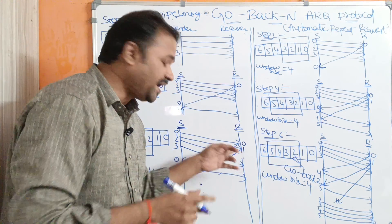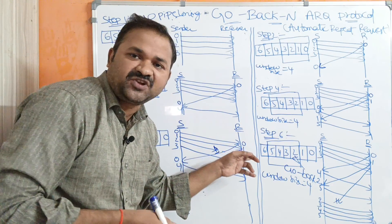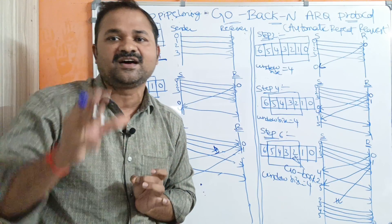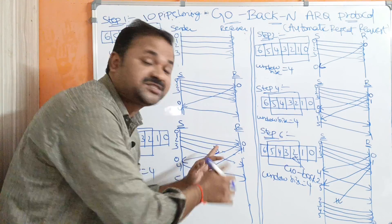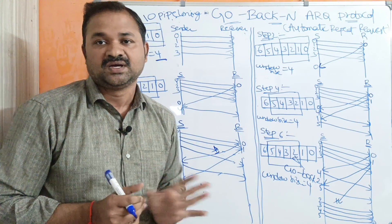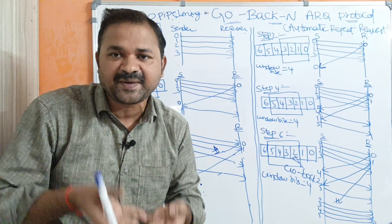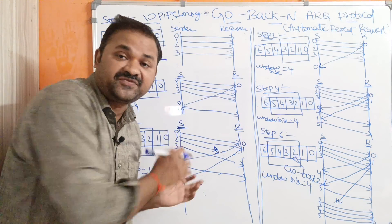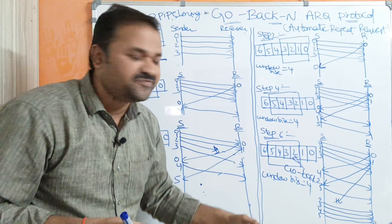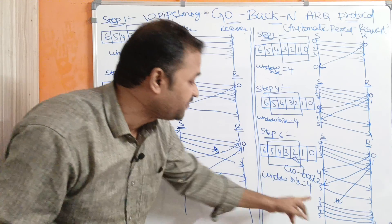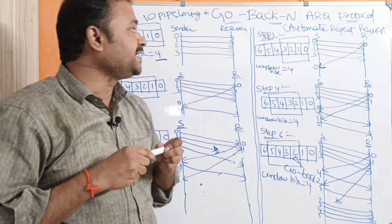There are two scenarios. First scenario: the frame is successfully received by the receiver, the receiver sends the acknowledgement, but the acknowledgement is lost. Second scenario: the second frame itself is lost. In both cases, every frame has a timer, and after the time period expires without receiving an acknowledgement, the sender retransmits from the second frame to the remaining frames one more time. This is the Go-Back-N ARQ protocol.